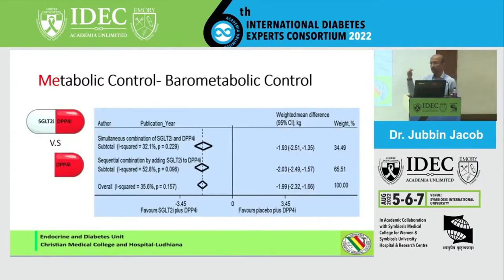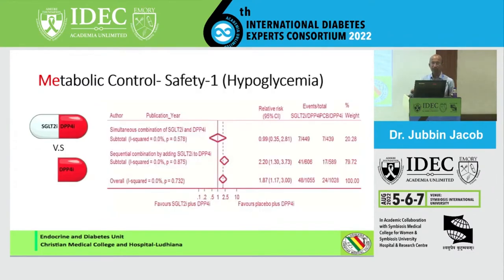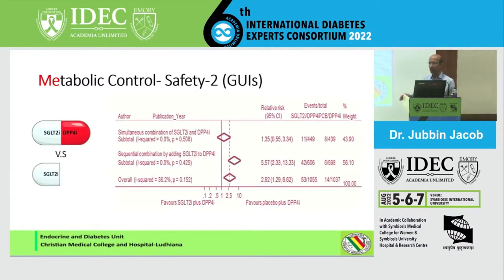For the icing on the cake — barometabolic control — SGLT2 will provide some degree of weight loss. It may not be the extent you would get with a GLP-1 analog, but still significant: about 3 to 4 kg weight loss. In studies comparing SGLT2 versus DPP-4, there is about a 3.4 kg weight loss seen with this combination. In terms of safety, both drugs do not cause hypoglycemia. Surprisingly, when using this combination, some side effects of SGLT2 inhibitors were also reduced — specifically, the occurrence of genitourinary candidal infections decreased. This has been seen with all three combinations currently available.